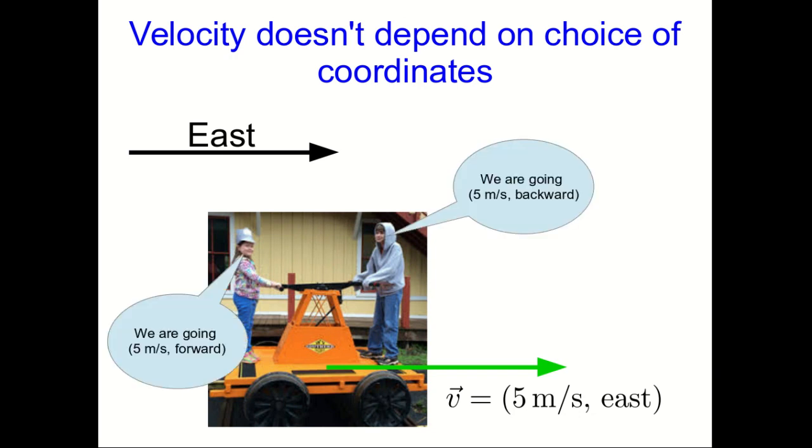However, you may describe that differently. One of you may say that you're going 5 meters per second forward, and the other might say you're going 5 meters per second backward.